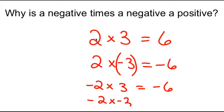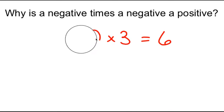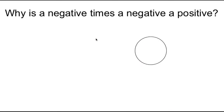Everybody's favorite: negative 2 times negative 3, which would be positive 6. Your teacher told you to memorize it anyway. But if you're one of those kids that asked why, hopefully this video will explain that, and I'll give you some concrete examples.